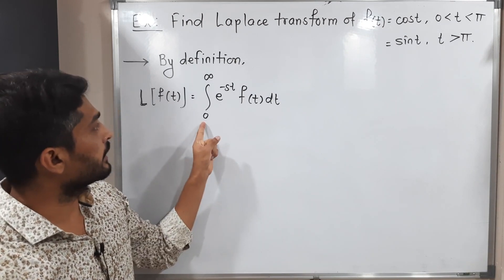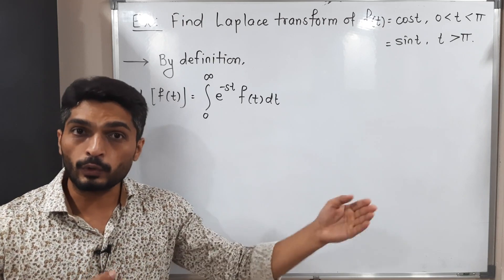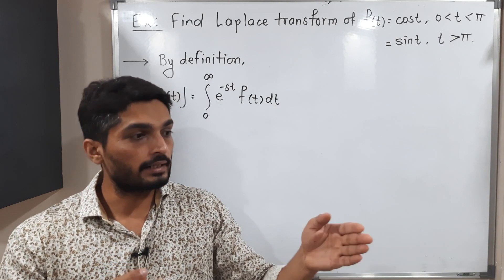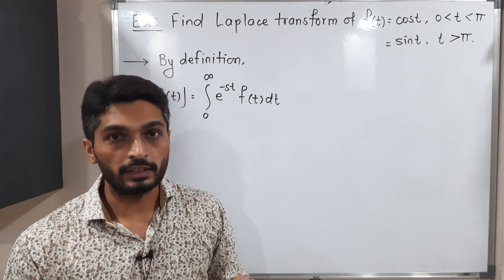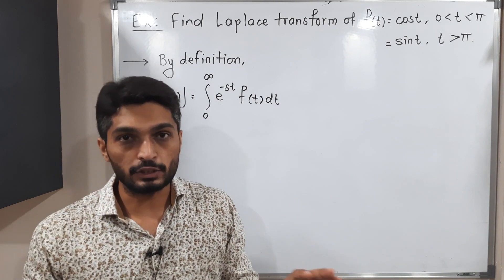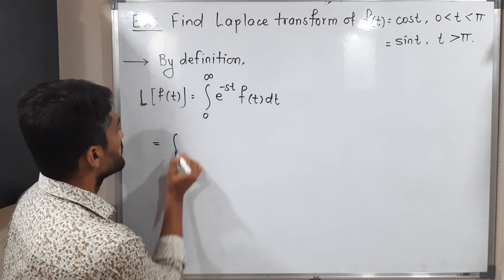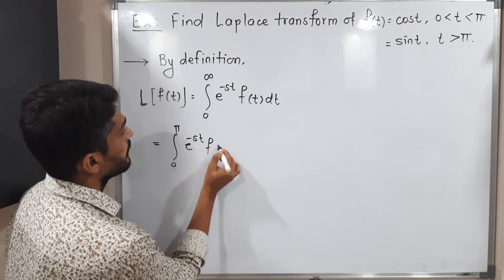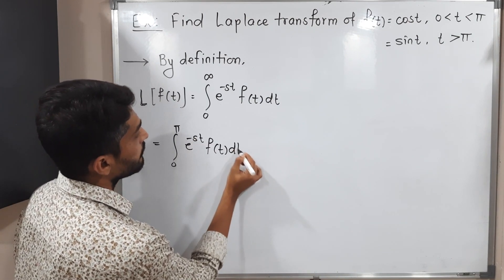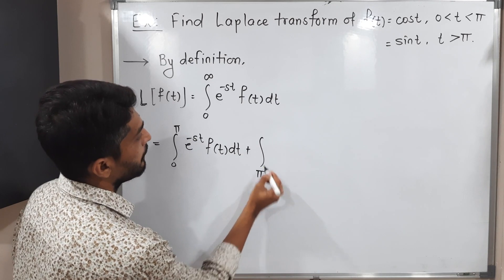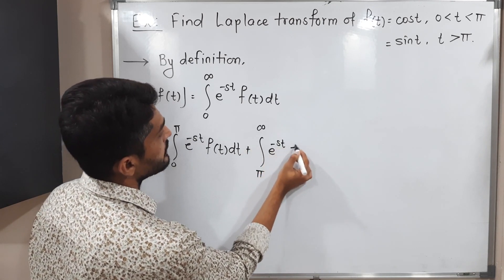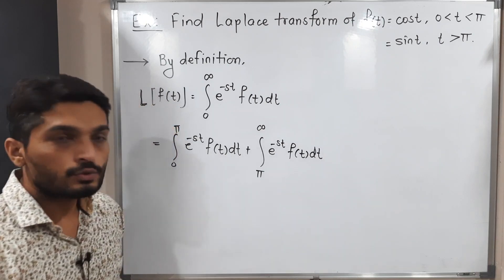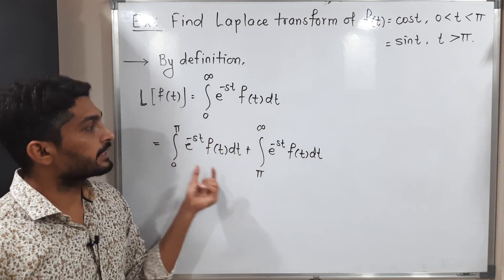In the definition we have an interval zero to infinity, but in our function we have an interval zero to π and the next one is π to infinity. So we split this integration: integration from zero to π of e^(-st) f(t) dt, plus integration from π to infinity of e^(-st) f(t) dt.